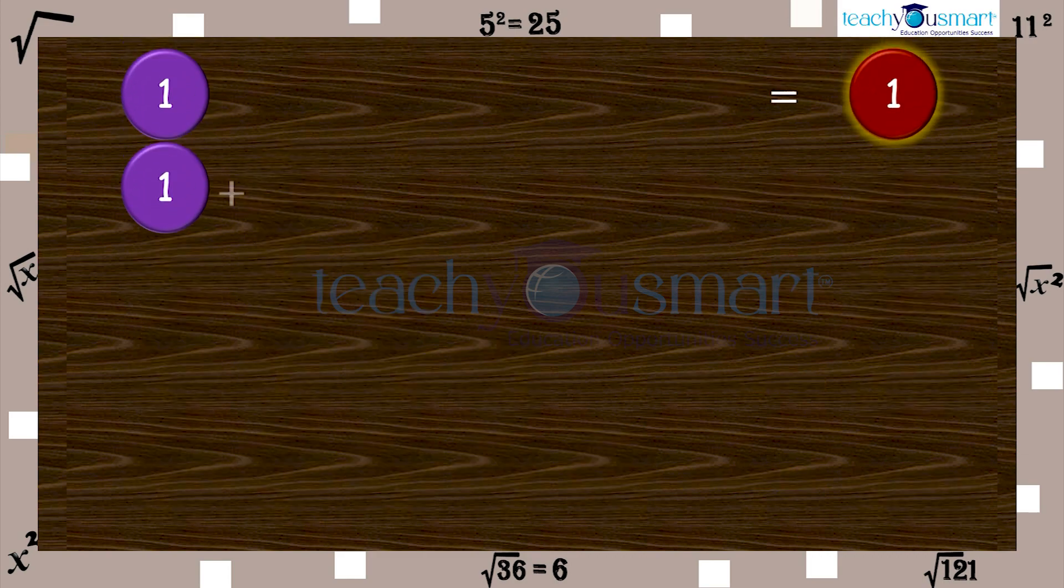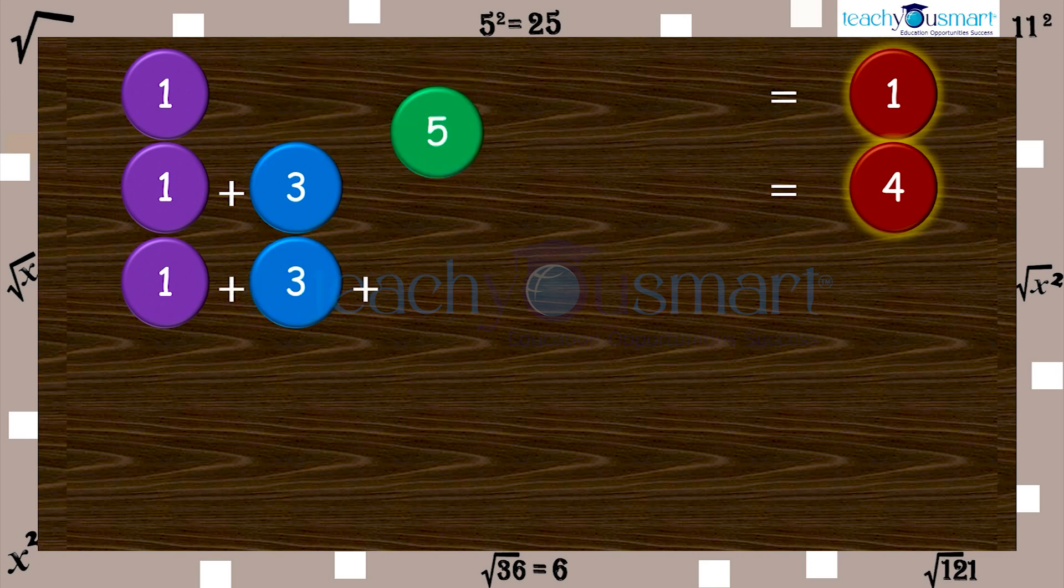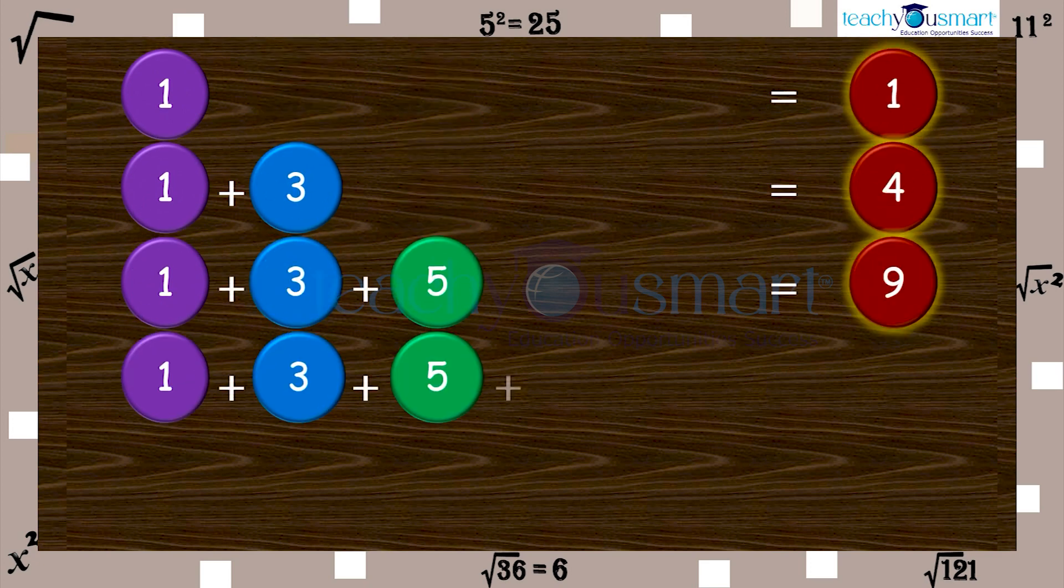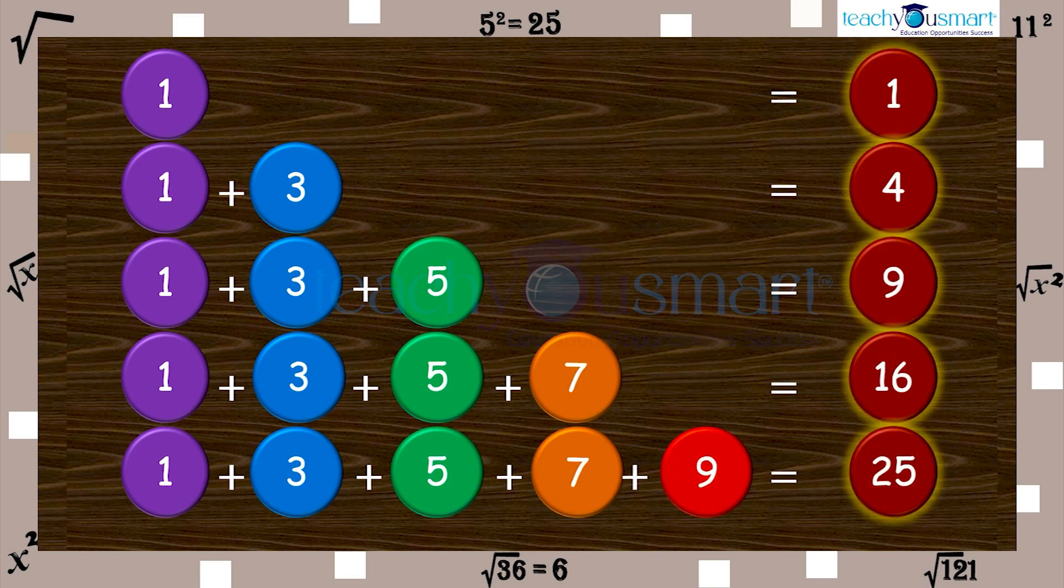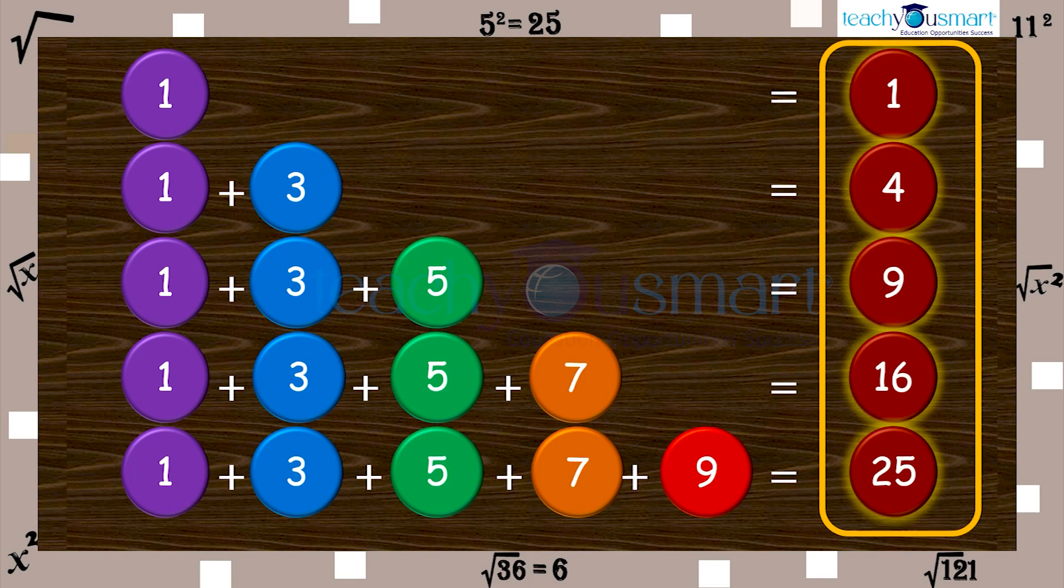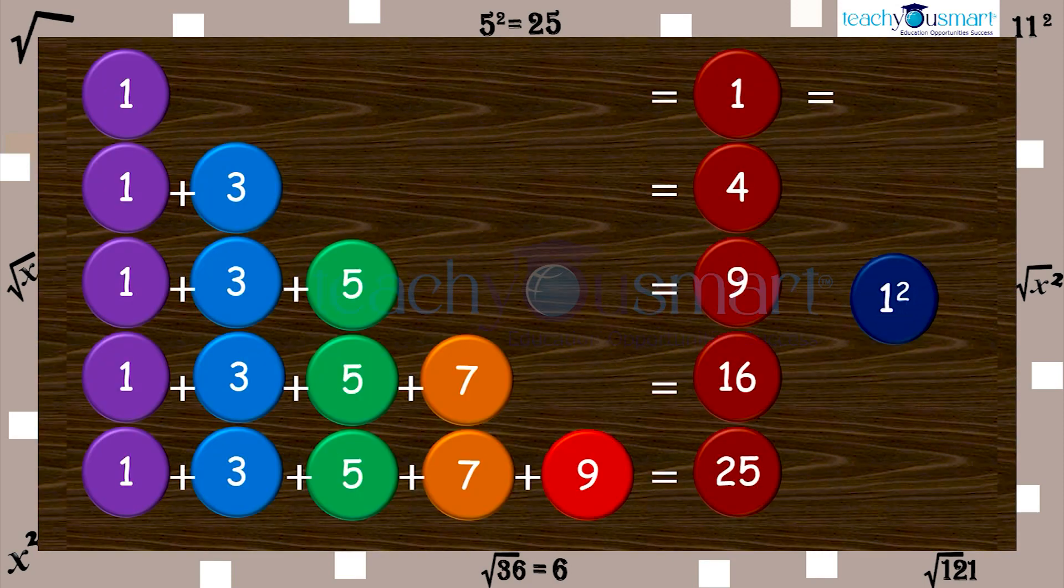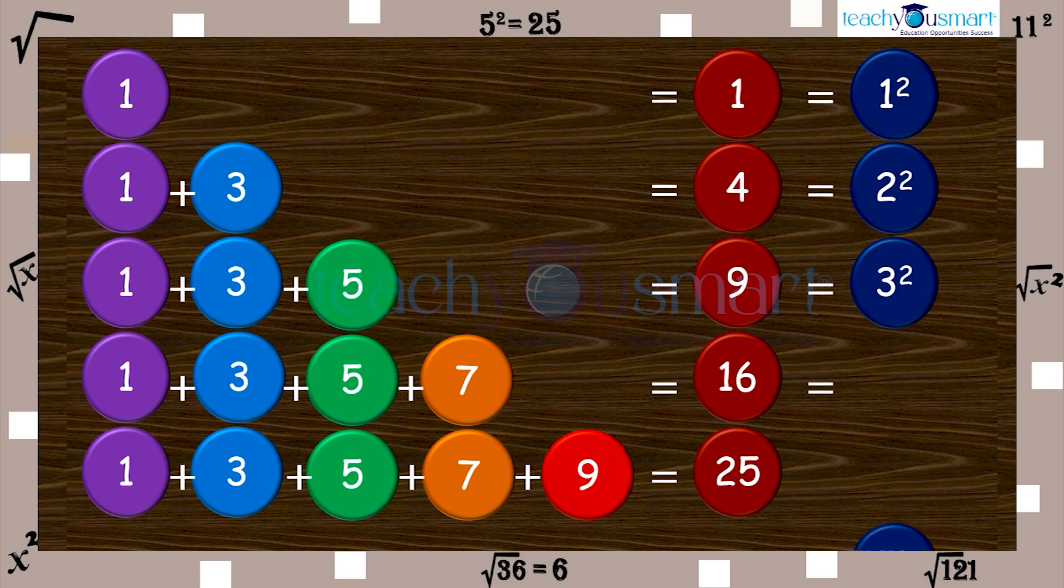Let's find the sum of terms in each row. Have you noticed anything special? Yes, they are perfect squares. That is, the sums can be expressed as squares of natural numbers. Note that the base number is equal to the number of terms in the series.